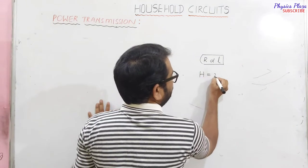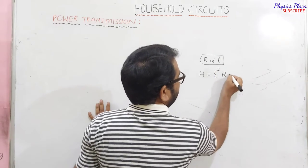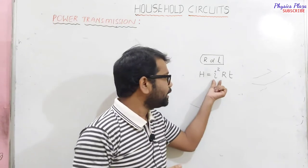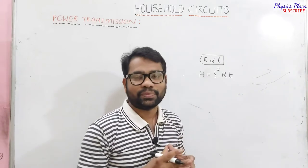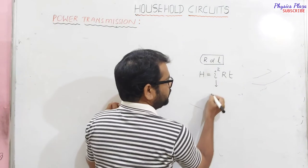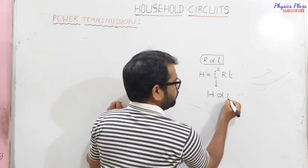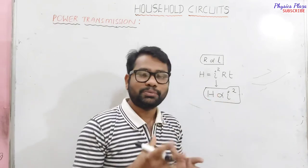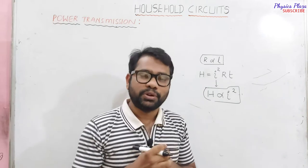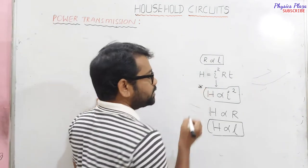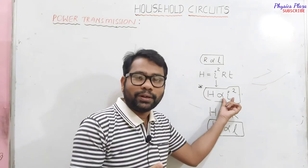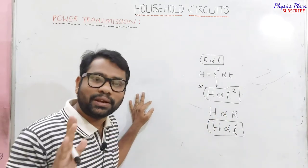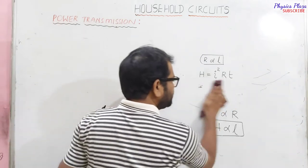From H = I²Rt, we know that H is proportional to I². More current flowing means more heat produced; less current means less heat. This is very very important — if more current is involved, more heat is produced. Keep this in mind so you don't get confused when we discuss power transmission.